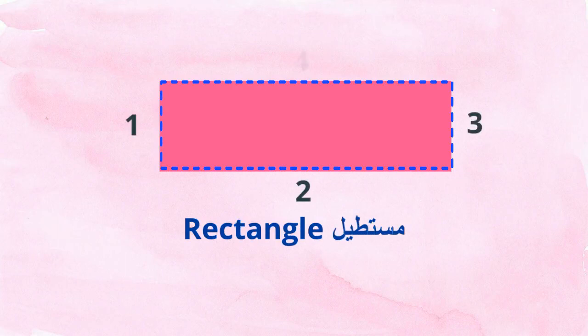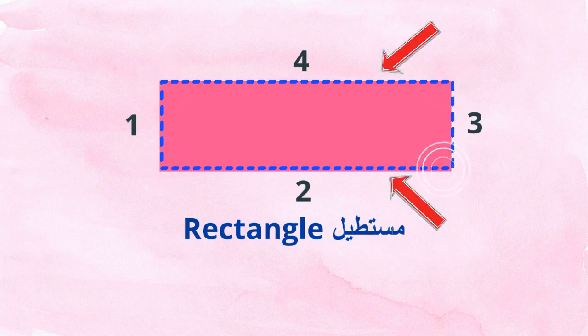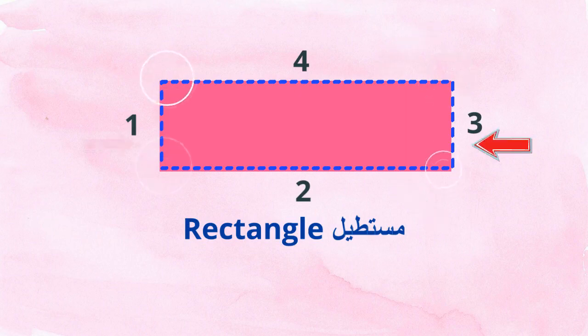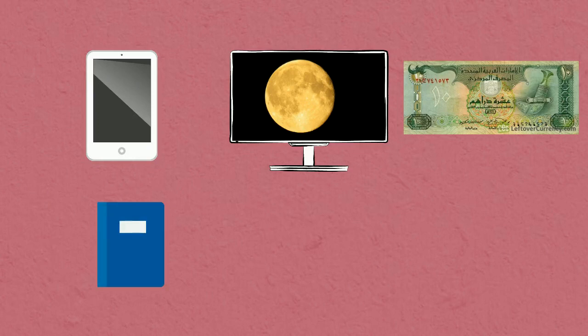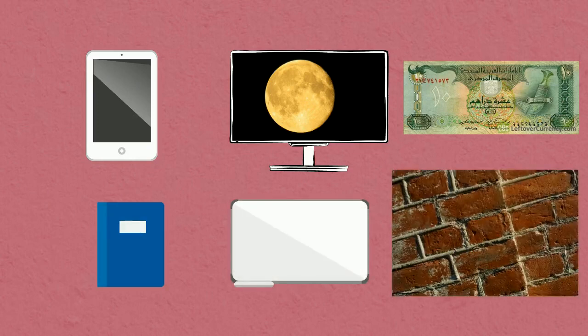This is a rectangle. A rectangle is a 2D shape, that means it is a flat shape. The rectangle has 4 sides and 4 corners. It has 2 long sides and 2 short sides. There are many things around us that have a rectangular shape, such as the iPhone, the computer screen, the notebook, the whiteboard, and the bricks.